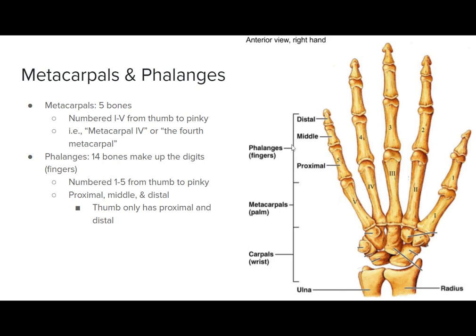So then you have the phalanges and that makes up the fingers. And in anatomy, we call those digits. The fingers are called digits. Those have three different parts. You have the proximal side, the middle side and the distal side. Those are just what they sound like, except for the thumb. The thumb only has a proximal and distal phalange.